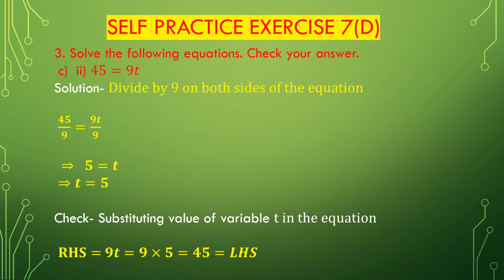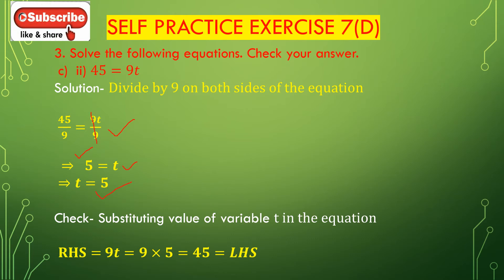Now question number 2b: 45 = 9t. Here 9 is multiplied with t on the right hand side, so we have to divide by 9 on both sides. We get 45 divided by 9 equal to 9t divided by 9. 45 divided by 9 is 5, and 9t divided by 9 gives t. So t = 5.